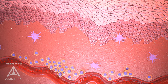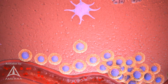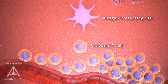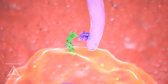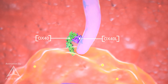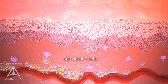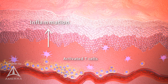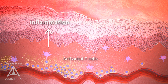OX40 is an inducible co-stimulatory receptor that is highly expressed in lesional skin and circulating activated T-cells of patients with AD. When OX40 binds to its ligand OX40L, it promotes T-cell differentiation and survival of pathogenic effector and memory T-cells, which contributes to AD pathogenesis and chronicity.